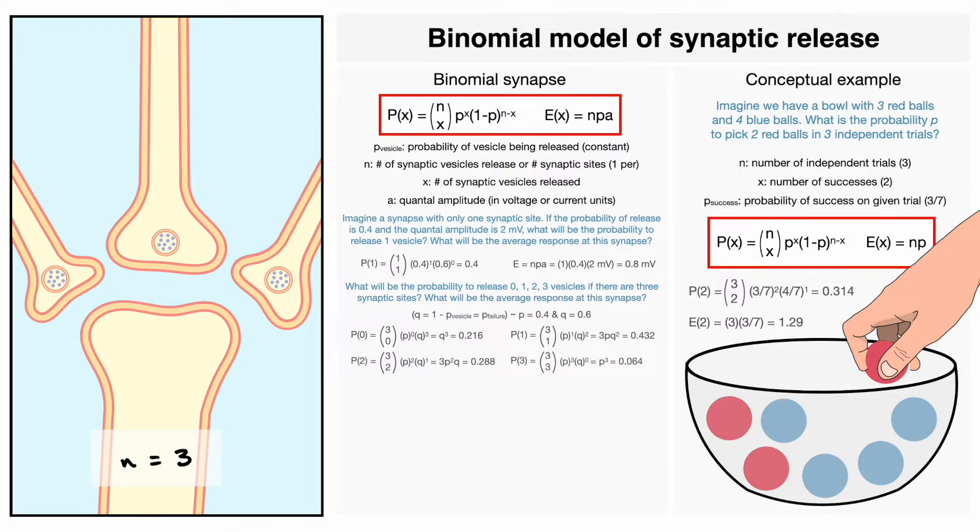For example, the probability that no vesicles will be released is 0.216, the probability that 1 will be released is 0.432, and so on up to 3 vesicles. In instances like this, where we have many synaptic contacts, the combination term is very important because it presents the different possible combinations of the scenarios that can occur.